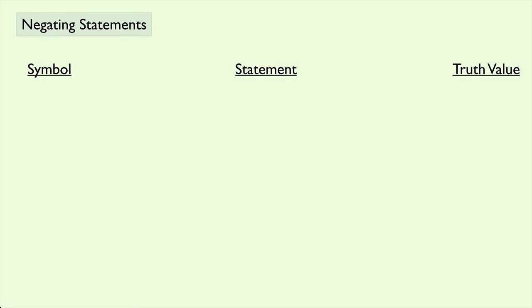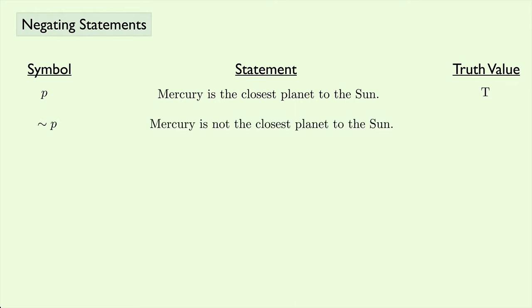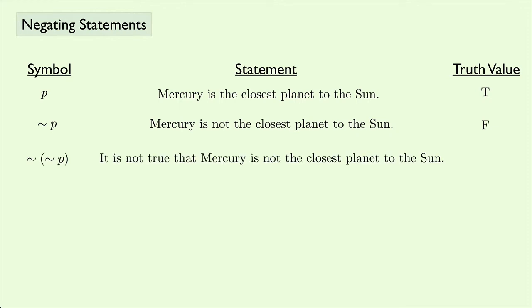Now I want to look at some notation — a symbol, a statement, and a truth value. In logic, when we want to represent a statement concisely, we use a single letter. For example, the letter P could represent the statement: Mercury is the closest planet to the sun, and that would have a truth value of true. The negation of this statement, which I write with a little tilde in front of the P, would be: Mercury is not the closest planet to the sun, and that has a truth value of false. If I wanted to negate the negation, I could write tilde-tilde-P, and that would mean it is not true that Mercury is not the closest planet to the sun — and then we're back to true.